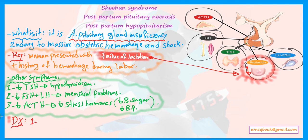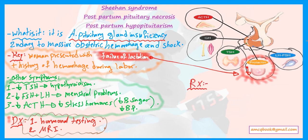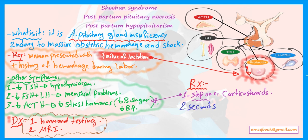For diagnosis, the first step is hormonal testing and the second step is MRI. For treatment, the first drug to give is corticosteroids, to reverse the effect of decreased ACTH and stress hormones. The second drug is thyroxine hormone.